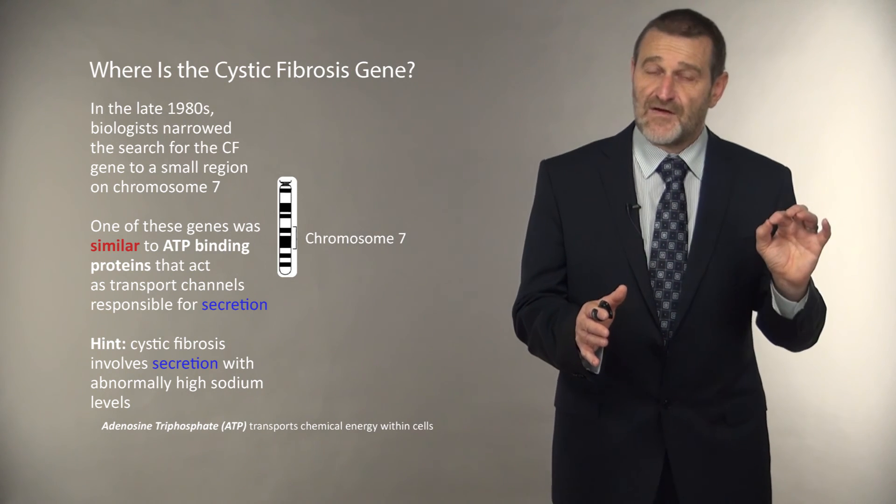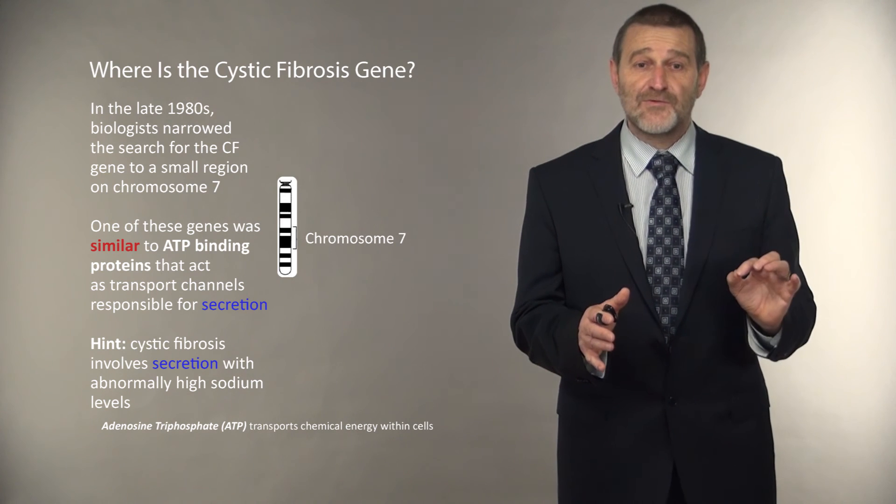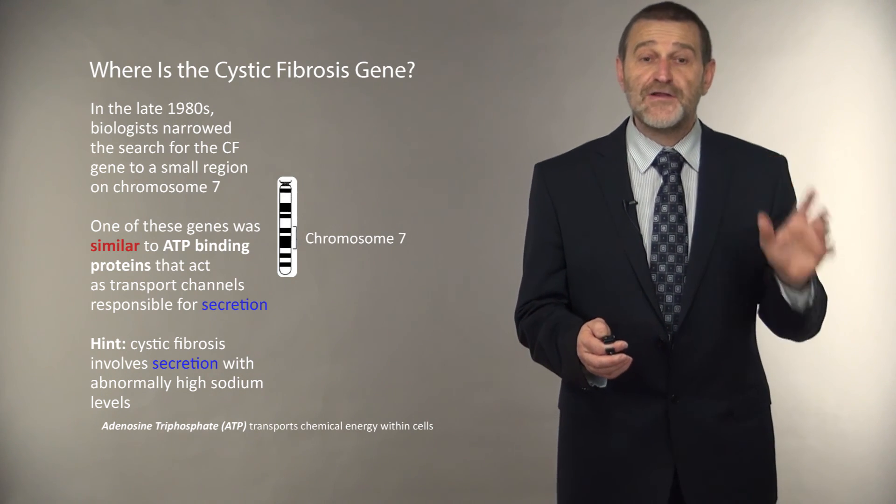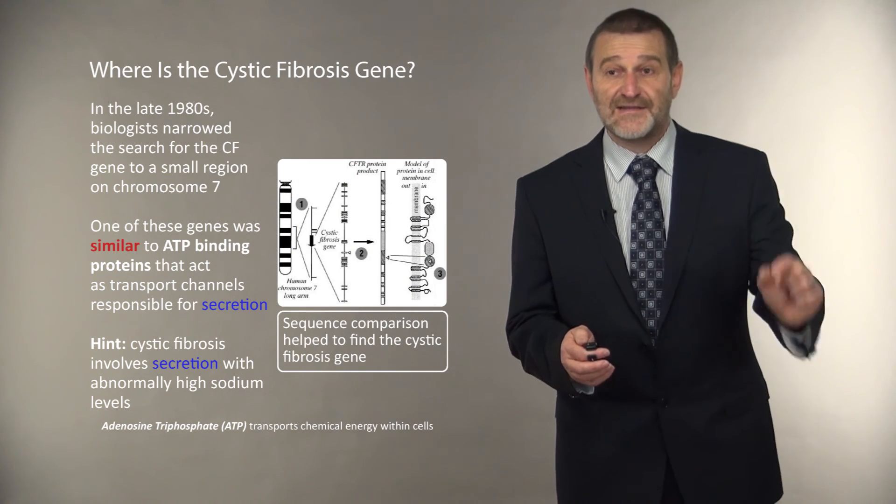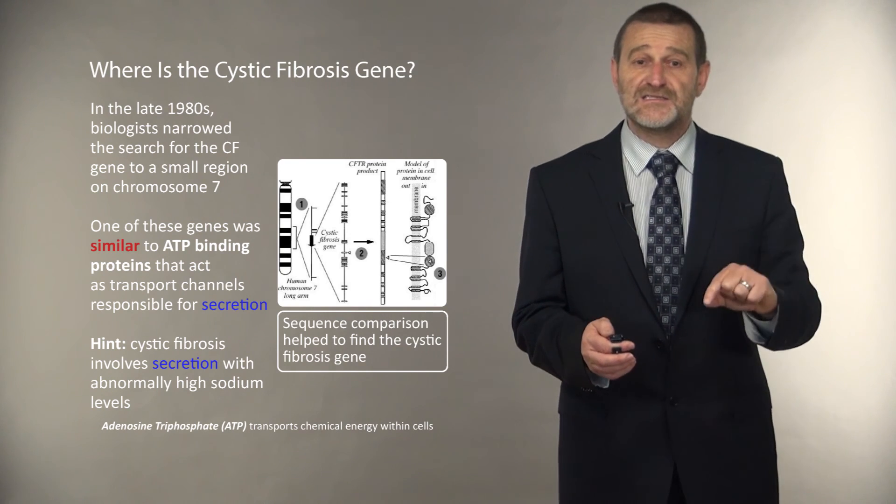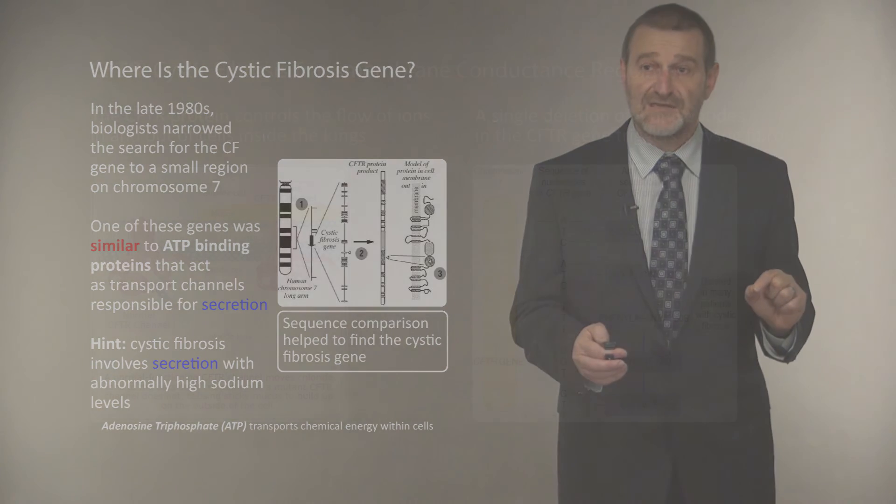Remember, cystic fibrosis is related to secretion, and ATP binding proteins are also related to secretion. That was a Eureka moment, and biologists conjectured that this specific candidate gene, thanks to the similarity search, is actually the gene responsible for cystic fibrosis.